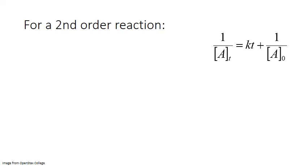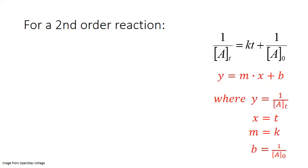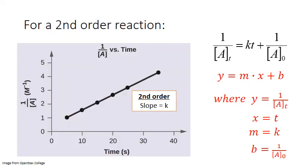For the second-order integrated rate law, the straight-line relationship also works. This time, the y variable is the inverse of the concentration of the reactant A, x is still the time, and the slope corresponds to the positive rate constant. The y-intercept is the inverse of the initial concentration of A. So if we graph the inverse of concentration versus time for a particular reaction and get a straight line, it indicates we're dealing with a second-order reaction.